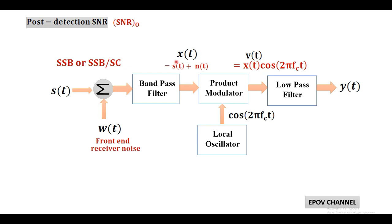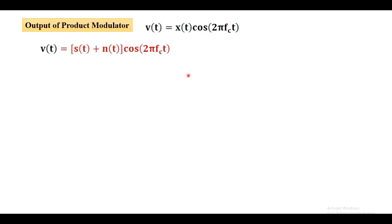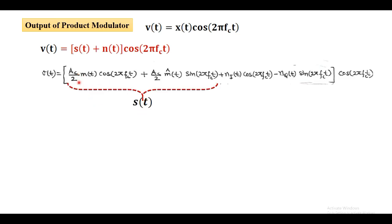For the derivation of output SNR, we use the output of the product modulator: v(t) = x(t) · cos(2π f_c t), where x(t) = s(t) + n(t). Here s(t) is the SSB suppressed carrier wave and n(t) is the narrow-band noise. The SSB wave has in-phase and quadrature components: s(t) = (ac/2)·m(t)·cos(2π f_c t) + (ac/2)·m̂(t)·sin(2π f_c t). The narrow-band noise also has in-phase and quadrature components: n(t) = n_I·cos(2π f_c t) − n_Q·sin(2π f_c t).